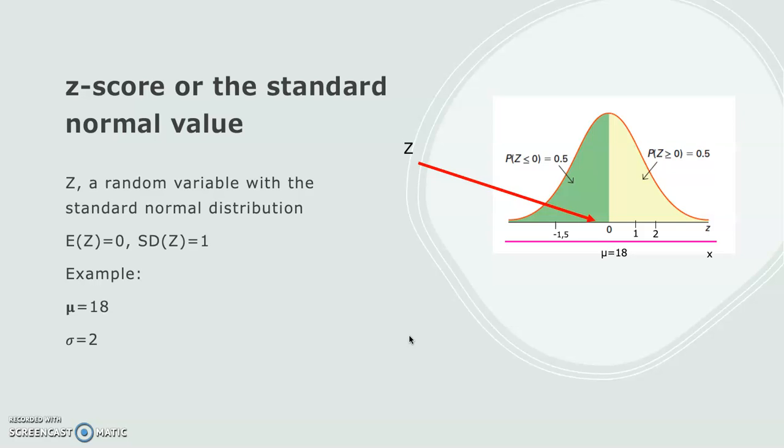A z-score of 1 implies that the given value is one standard deviation above the mean, or x = 18 + 2 = 20. A z-score of 2 implies that the given value is two standard deviations above the mean, or x = 18 + 2(2) = 22.